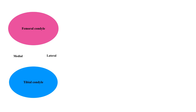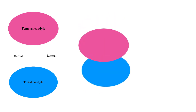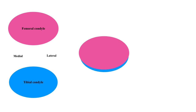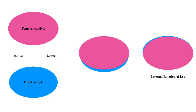In a normal knee joint with an intact anterior cruciate ligament, the distal femoral condyle directly sits above the tibial condyle without any anterior translation of the tibia.